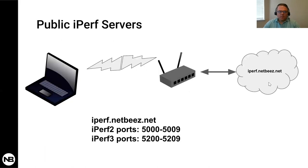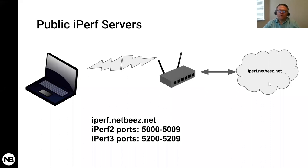For public iPerf servers, you can Google to find many out there. For today's webinar you can use iperf.netbiz.net. It's listening on ports 5000–5009 for iPerf 2 and 5200–5109 for iPerf 3. When using public iPerf servers, keep in mind you don't know who maintains them, what their networking capabilities are, or who else is using them at the same time. Your measurements can vary. For more reliable and consistent results, it's better to use your own known source and destination.